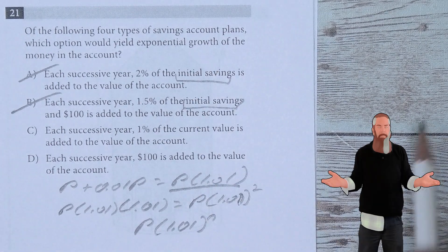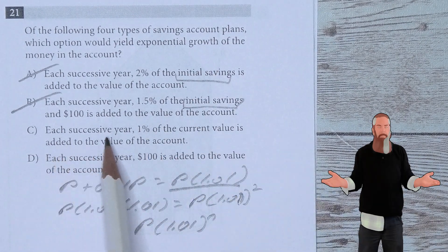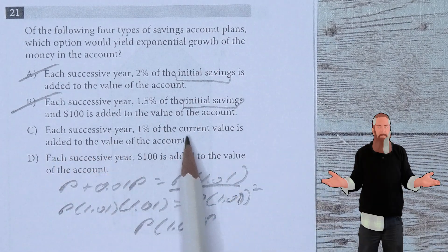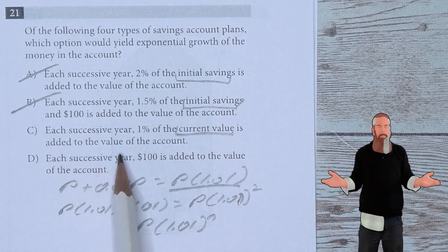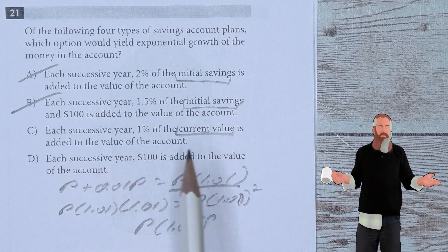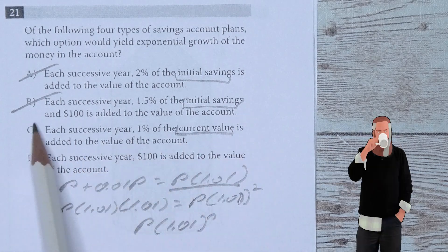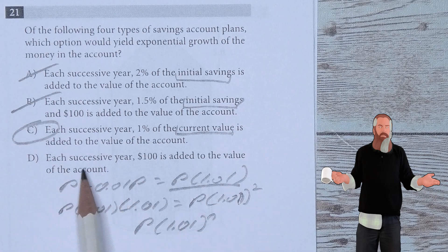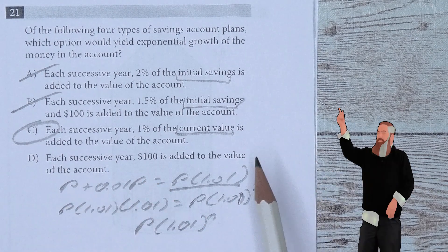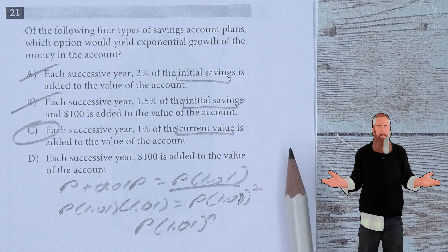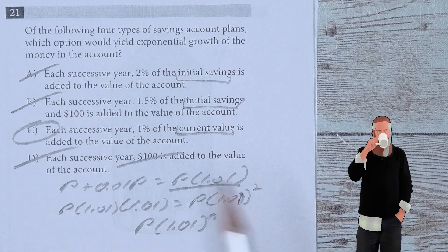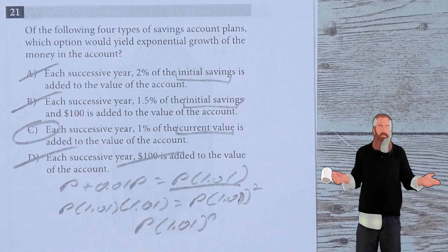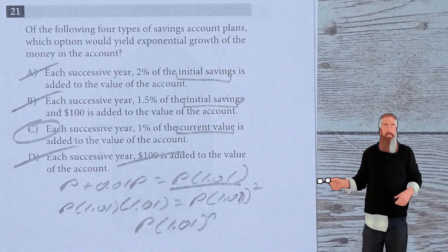Each successive year, 1% of the current value is added to the value of that account — that sounds pretty good. Each successive year, $100 is added — well, we don't know how much money is even being dealt with there, so we can't say that D is the answer. We're left with C.